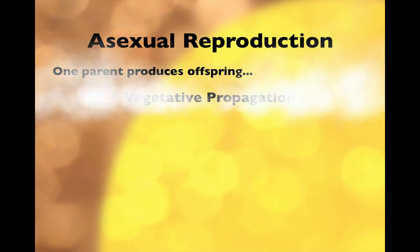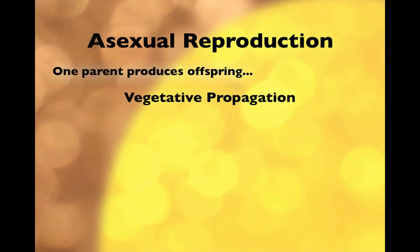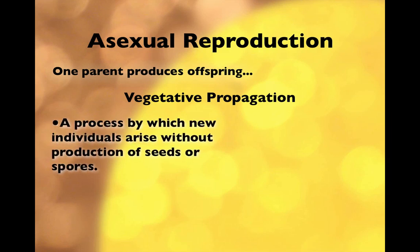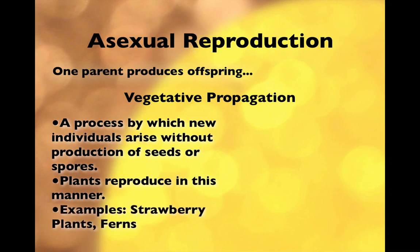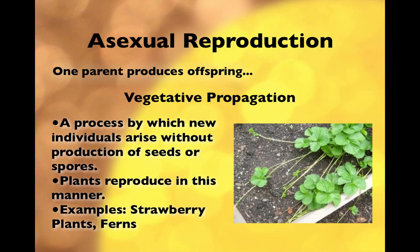The third type is called vegetative propagation — two big words. This happens generally in plants, where new organisms are produced without the use of a seed or spore. Good examples are strawberry plants and ferns. Strawberry plants produce little shoots called runners, and at the end of each runner you can see a new strawberry plant actually taking root in the soil, producing a whole new plant.